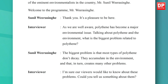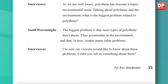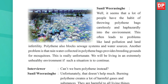As we are all aware, polythene has become a major environmental issue. Talking about polythene and the environment, what is the biggest problem related to polythene? The biggest problem is that most types of polythene don't decay — they accumulate in the environment, and that in turn creates many problems. I'm sure our viewers would like to know about these problems. Could you tell us something about them? Well, it seems that a lot of people have the habit of throwing polythene bags carelessly and haphazardly into the environment.